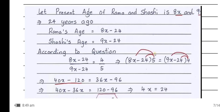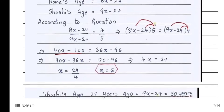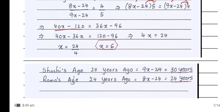Cross-multiplying: 5(8x − 24) = 4(9x − 24), giving 40x − 120 = 36x − 96. Bringing variables to one side: 40x − 36x = 120 − 96, so 4x = 24, therefore x = 6. Shashi's age 24 years ago = 9x − 24 = 30 years. Rama's age 24 years ago = 8x − 24 = 24 years.